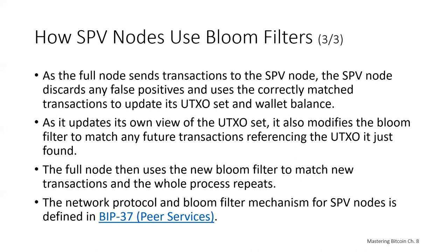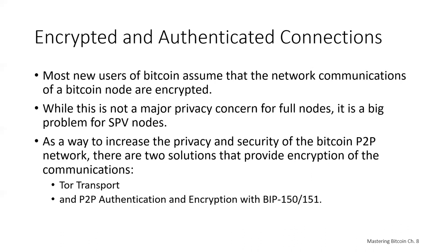A node can interactively add patterns to the bloom filter or send a clear message to reset it. Because it's not possible to remove a pattern from a bloom filter, a node has to clear and resend a new bloom filter if a pattern is no longer desired. The network protocol and bloom filter mechanism for SPV nodes was defined in Bitcoin Improvement Proposal 37 on peer services. Nodes that implement SPV have weaker privacy than a full node even with bloom filters — a full node has all the transactions and therefore doesn't reveal information about whether it has some address in its wallet. An SPV node's filtered list of transactions related to addresses still reduces the privacy of the owner.